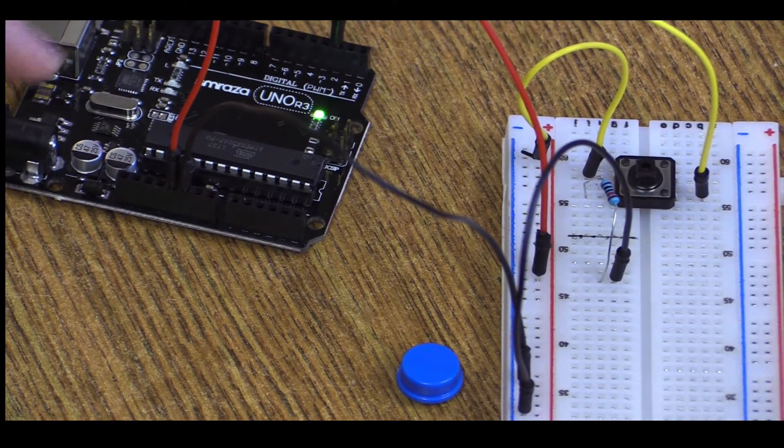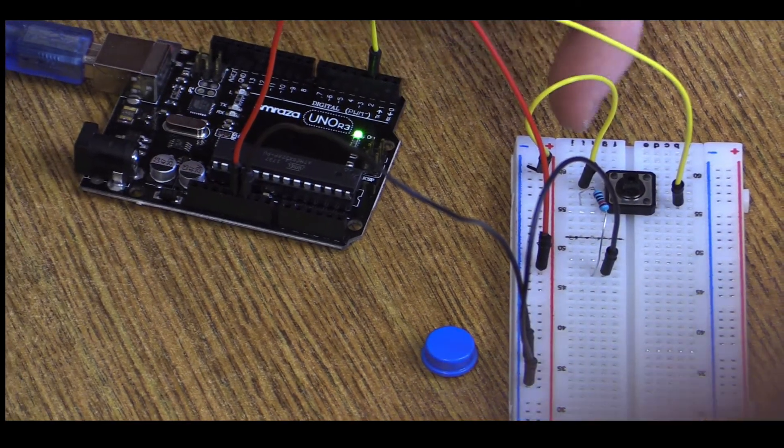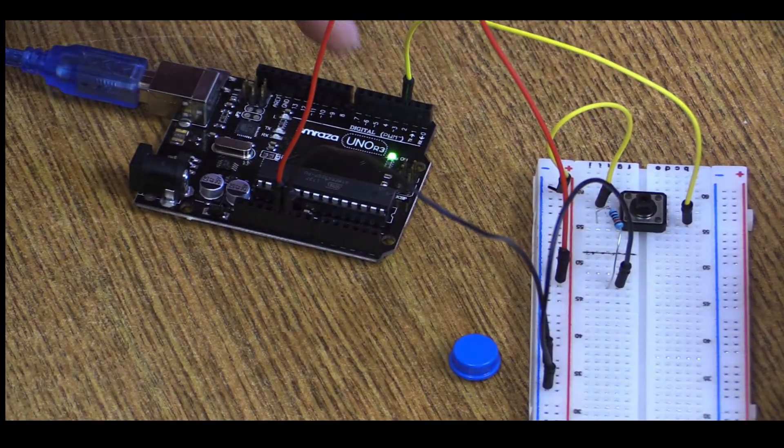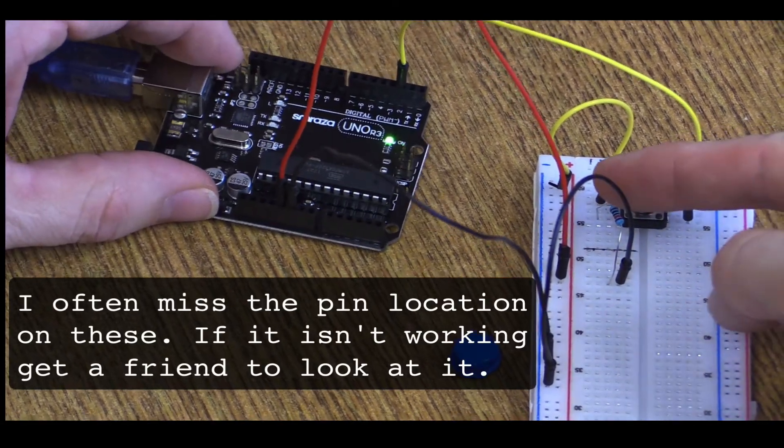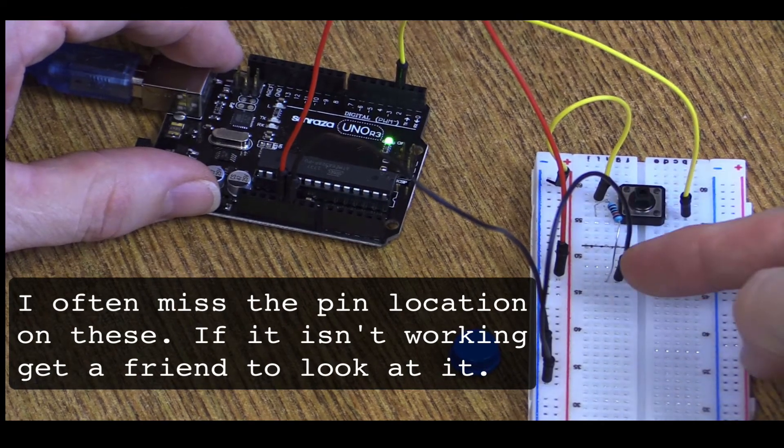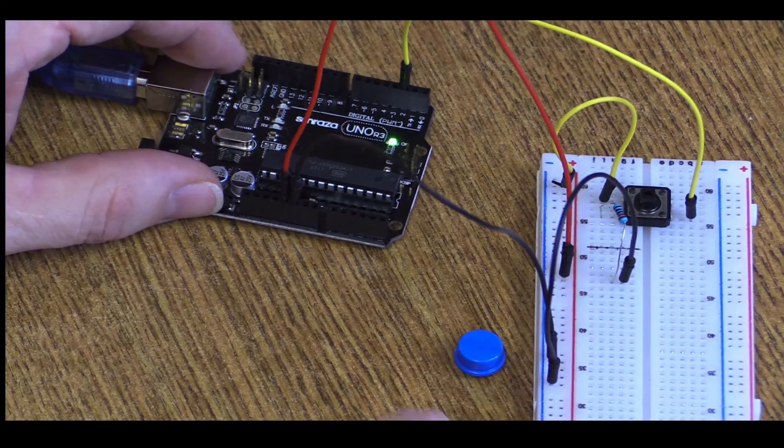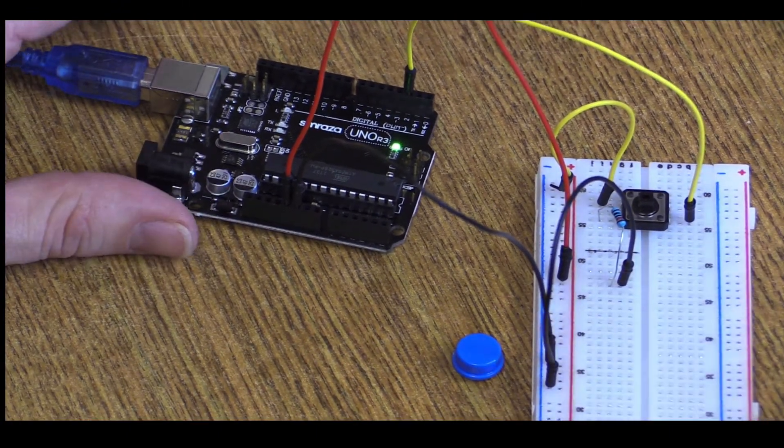So we have the power coming in from the red board into our plus, going over onto that pin. We have number two on the digital board coming over onto this side. We have our resistor pulling down from the button over to ground. The ground comes over to the line, and then it comes back into the Arduino to complete our circuit all the way around.